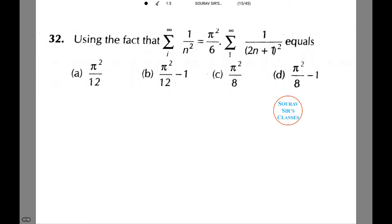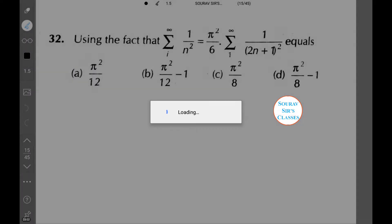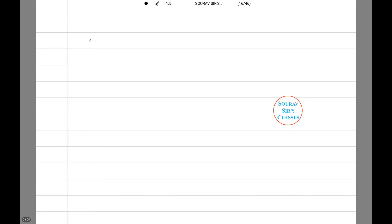We have Σ(1 to ∞) 1/n² = π²/6. This equals 1/1² + 1/2² + 1/3² + 1/4² + 1/5² and it continues, which equals π²/6.